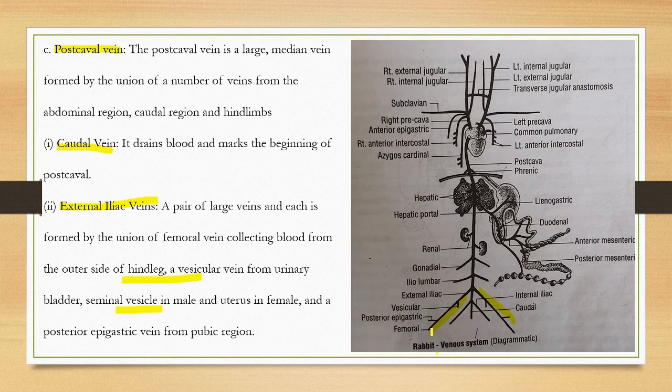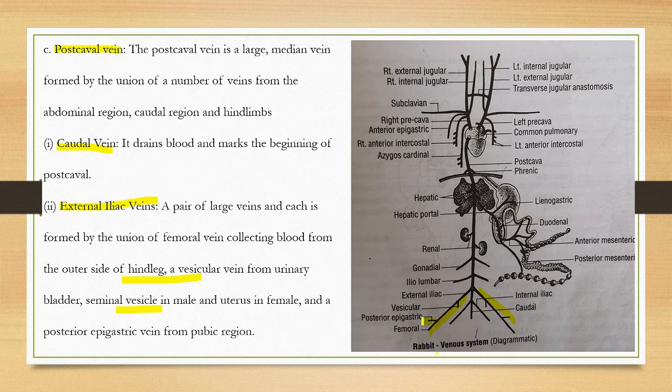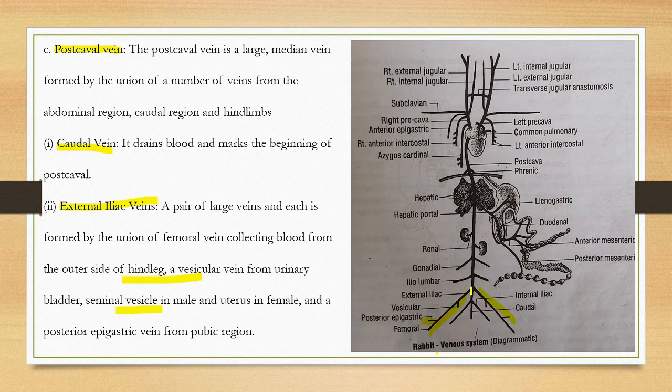This is the femoral vein collecting blood from the outer side of the hind leg. There is a vesical vein from the urinary bladder, seminal vesicle in male, uterus in female, and the posterior epigastric vein. The external iliac forms on the right and left sides.